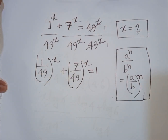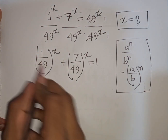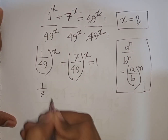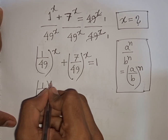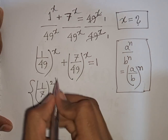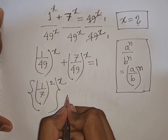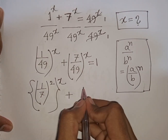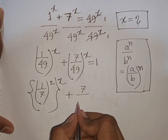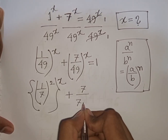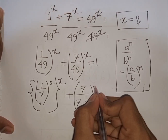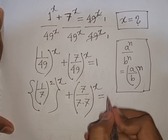Now 1/49 can be written as (1/7)^2. Then this first bracket can be written as a second bracket to the power of x. And 7/49 is the same as 7 over 7×7, so it will be written as (1/7)^x, which is equal to 1.